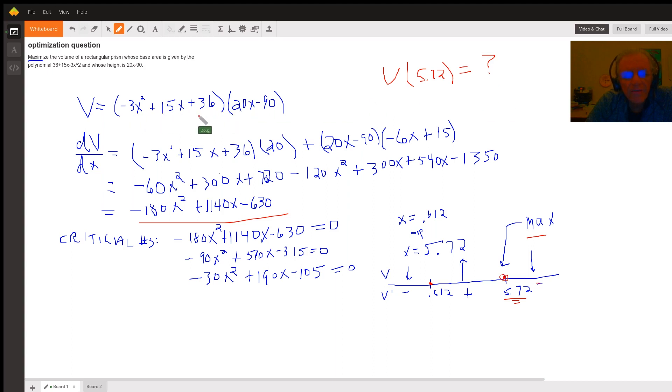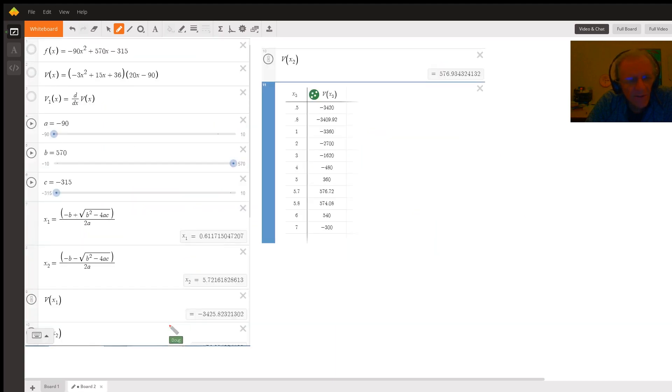Do I want to put 5.72 in here for x and do it by hand? No way. But I did go to the Desmos online graphing calculator and do some calculations.